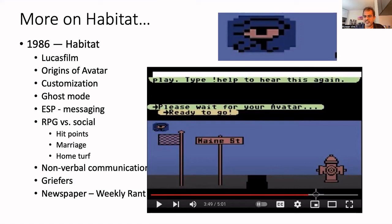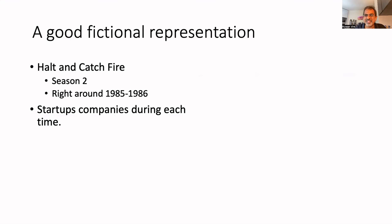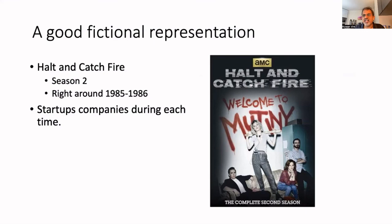If you're curious what it was like to run a video game company in this era, there's a TV show called Halt and Catch Fire. The first season takes place in the early 80s and is more about making physical computers. The second and third seasons are set in Dallas, running a video game company using modems and bulletin boards, kind of like Habitat, eventually relocating to Silicon Valley. The speaker ran a video game company decades later in 2010 during the mobile revolution, and a lot of what the show depicts was still relevant. For the entrepreneurial side of running a game company, the second and third seasons of Halt and Catch Fire are recommended.